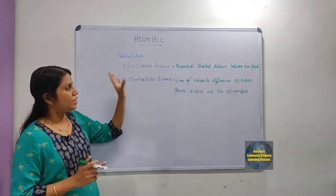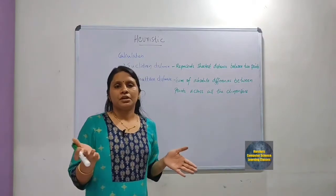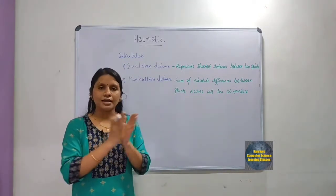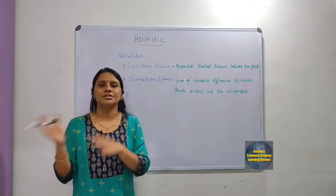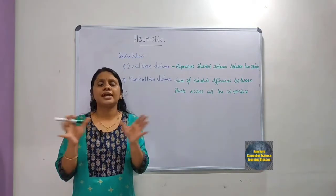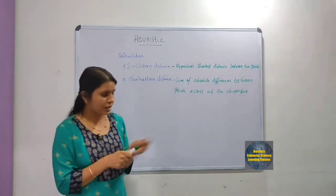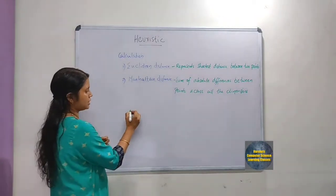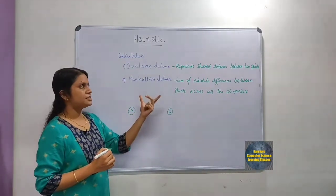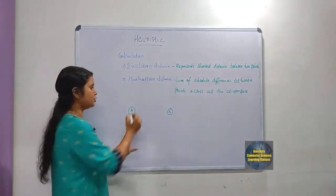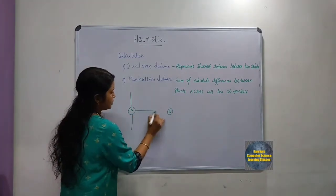Euclidean distance represents the shortest distance between any two points. There is a source and a destination, and Euclidean distance calculates the shortest path between them — it is a straight-line distance. Suppose we have a start state and a goal state; the Euclidean distance is the shortest path connecting these two states.